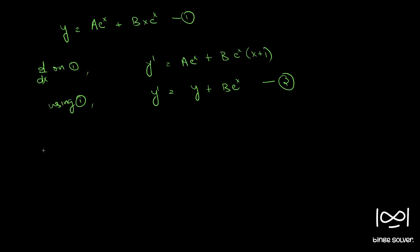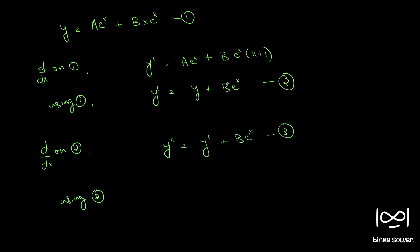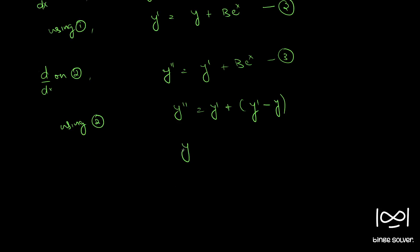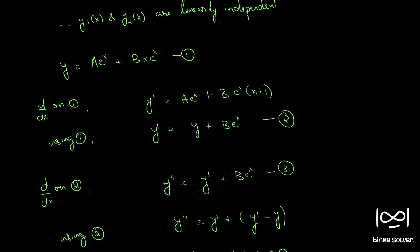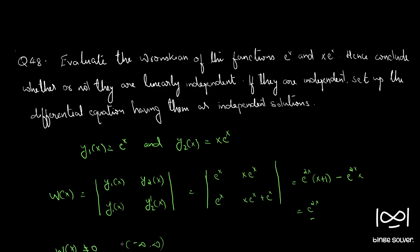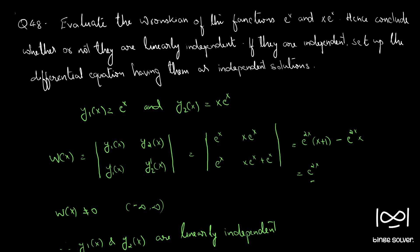Now differentiating equation 2 one more time, we get y'' = y' + be^x. Using equation 2, we can write be^x = y' − y. Therefore y'' = y' + (y' − y), which gives y'' − 2y' + y = 0. This is the required differential equation whose independent solutions are y1(x) and y2(x). This completes question 48.